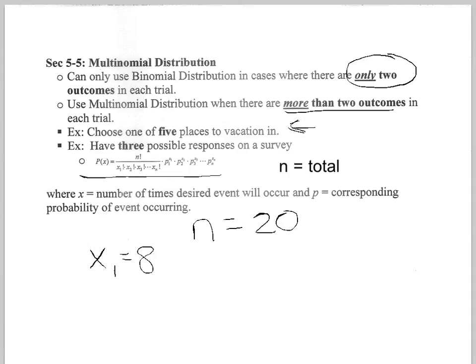And of the five locations, we want to know the probability that eight go to the first location, four go to the second location, five go to the third location, two to the fourth location, and one to that last location.